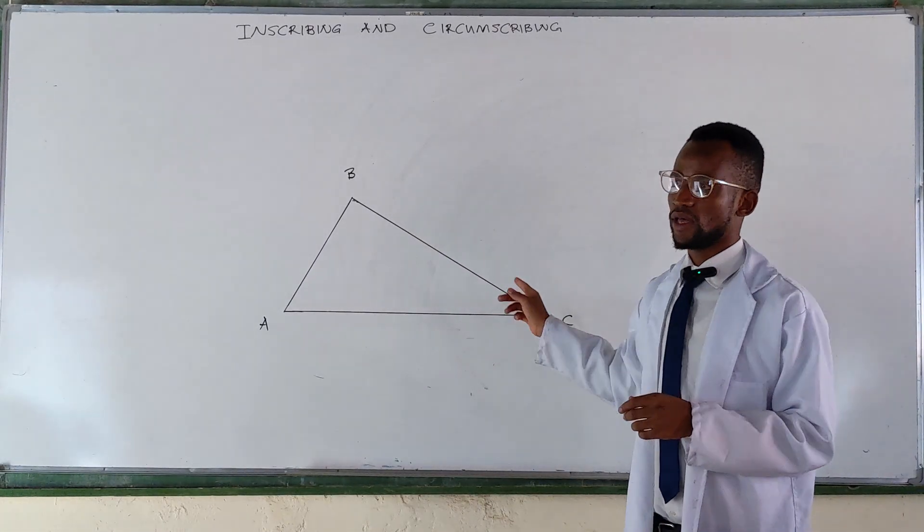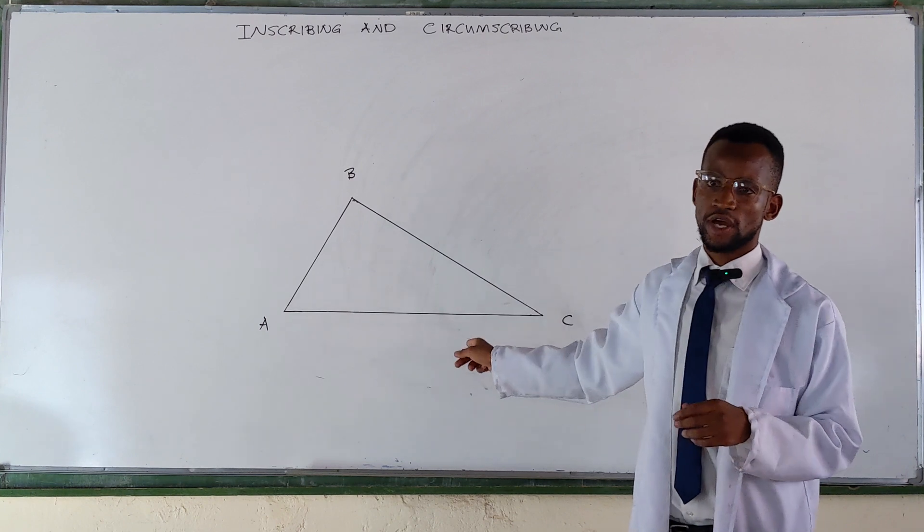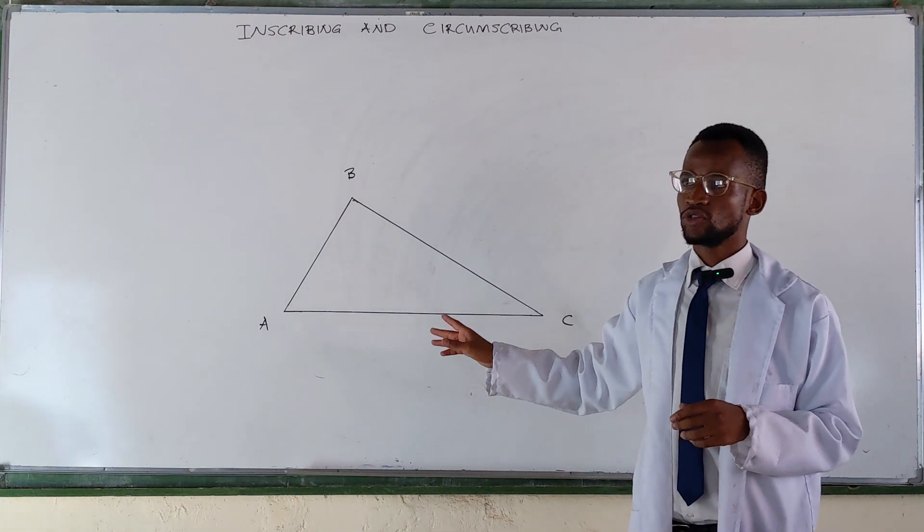Here we want to draw a circumscribed circle on this triangle. Can you keep quiet? Eyes on the board.